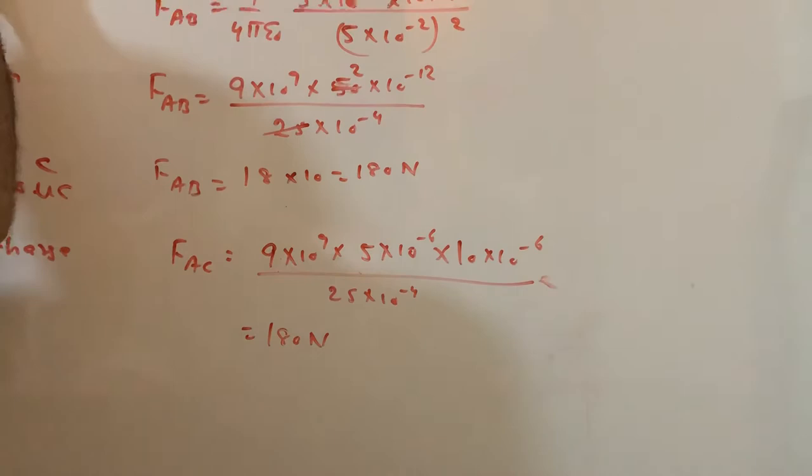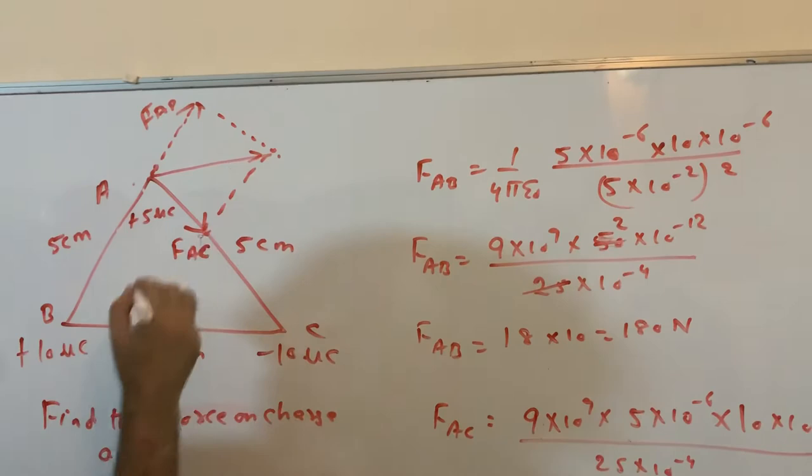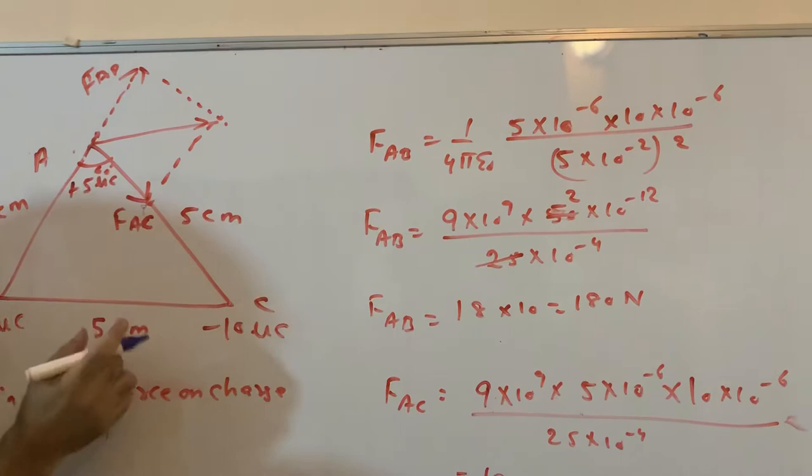I leave it to you for solving. This will again come out to be 180 N. Now you have to use parallelogram law of vectors, so complete this parallelogram. This angle is 60° in an equilateral triangle.